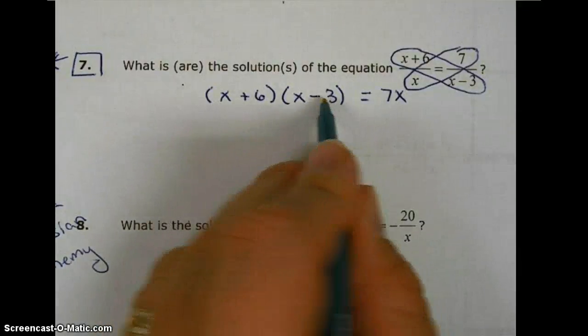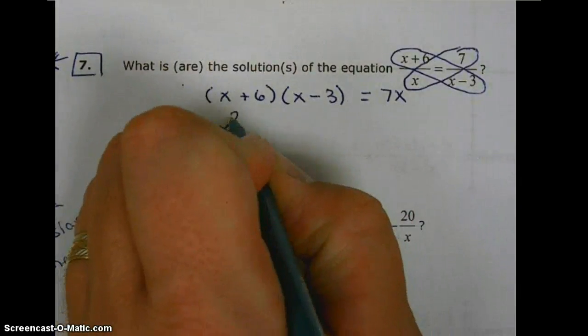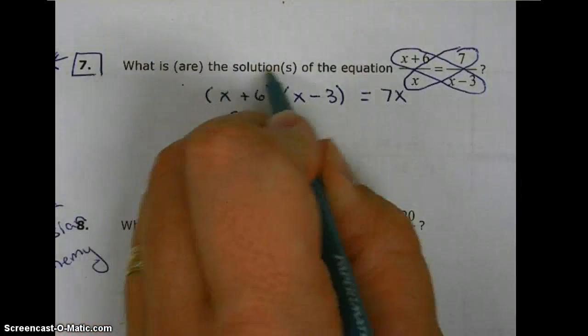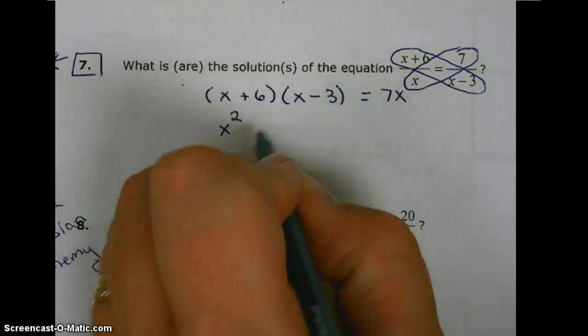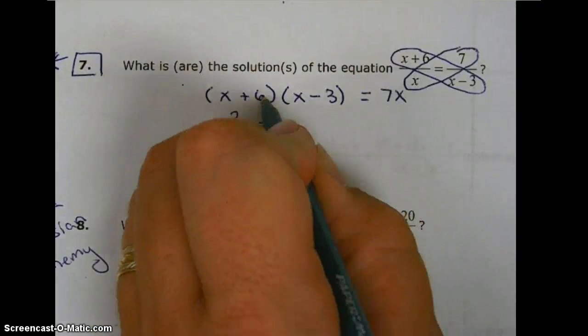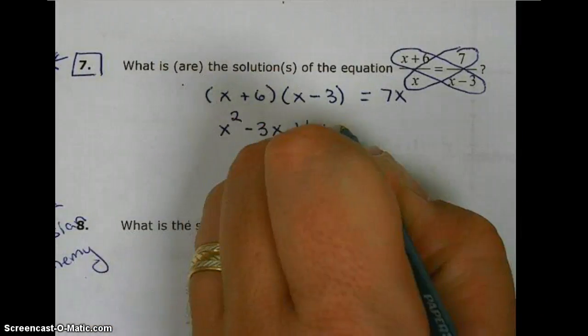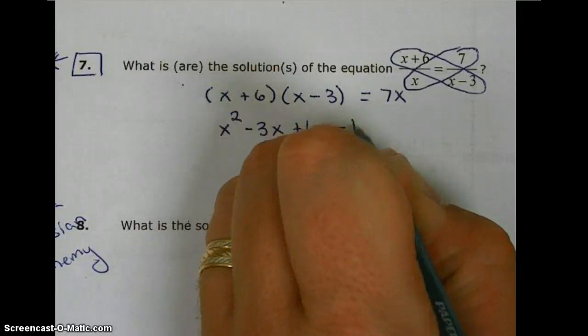Now, multiplying these two binomials together: first terms, x times x. Outer terms, x times negative 3. Inner terms, 6 times x. Last terms, 6 times negative 3, negative 18.